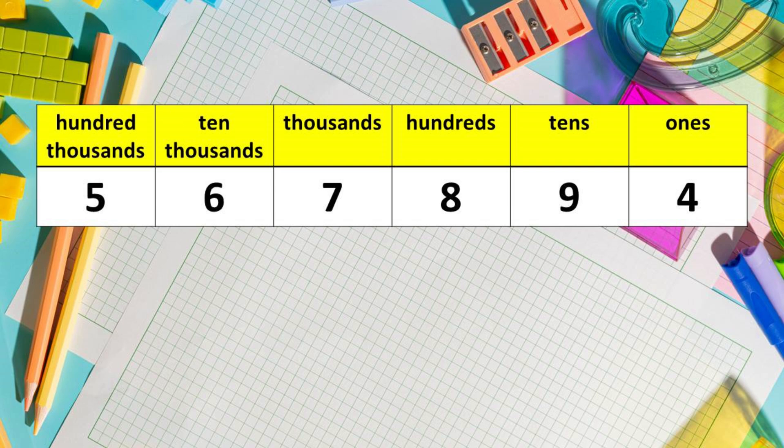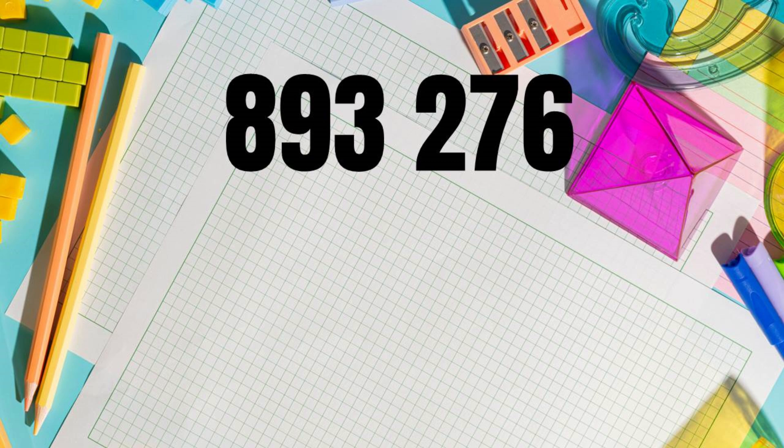How about this number? 893,276. What is the place value of 9? Very good. How about 8? That's right. Place value of 7. 6. Next. Very good. 3. Okay. And 2 is? Very good.